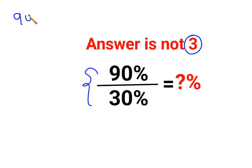Whenever you have a percent and you want to convert it into a number, you just have to divide it by 100. So let's just do this. 90% can be written as 90 upon 100 divided by 30%, which can be written as 30 upon 100.